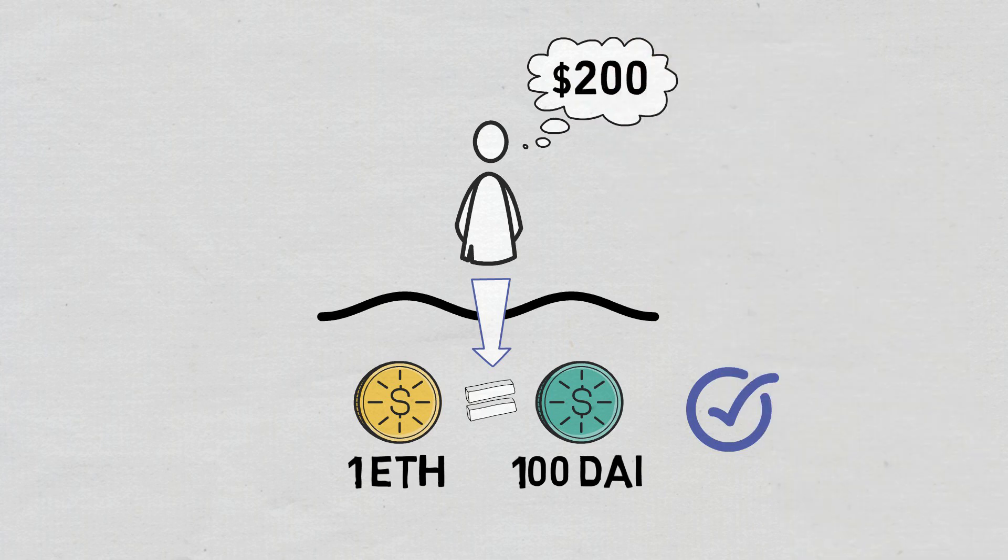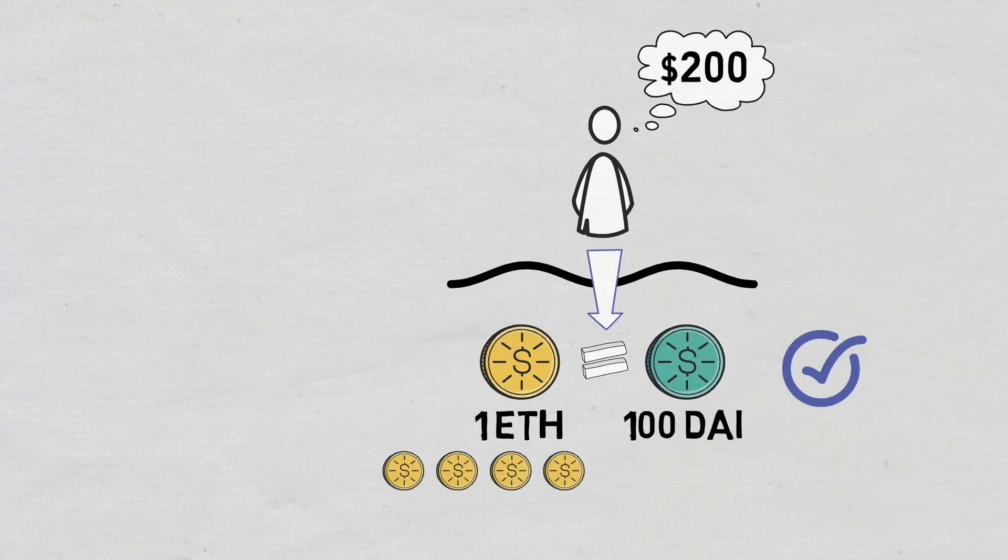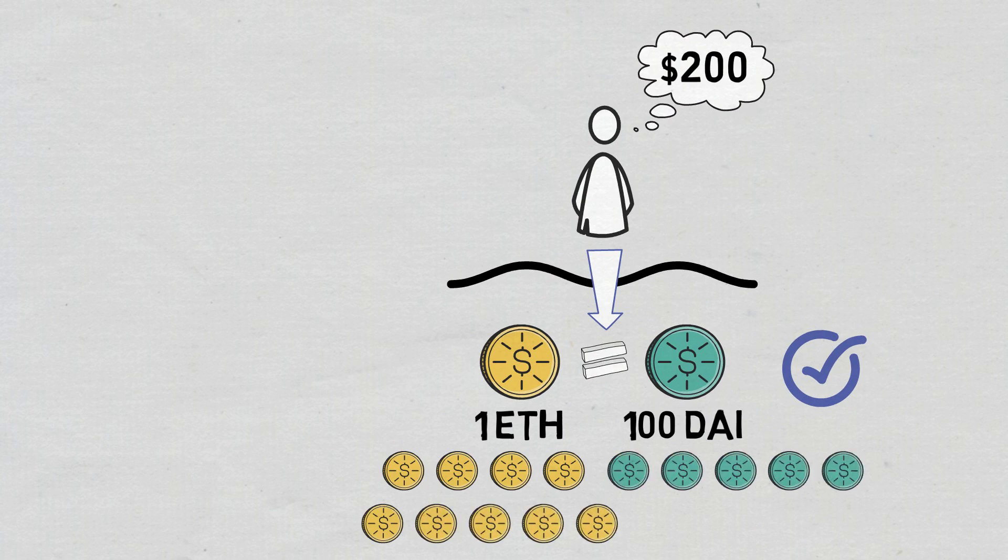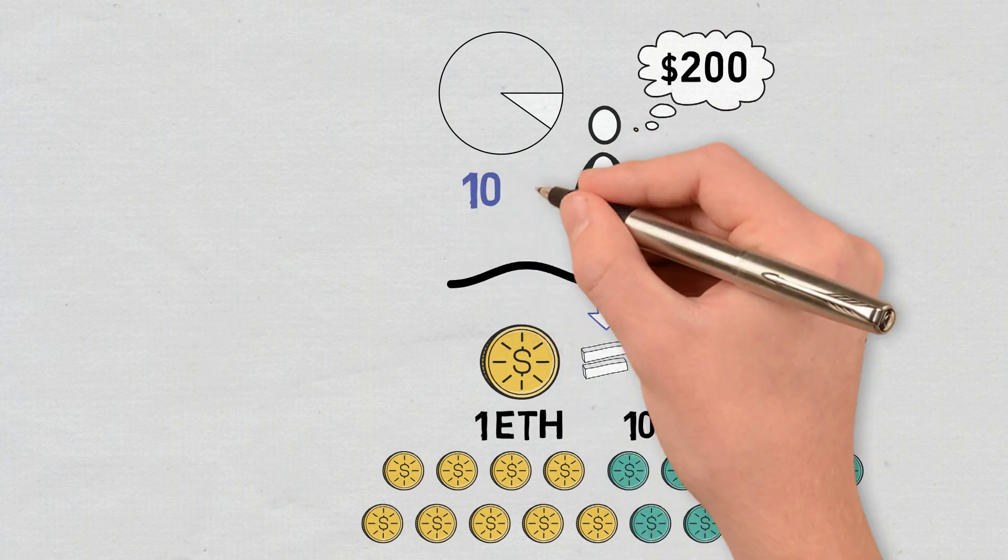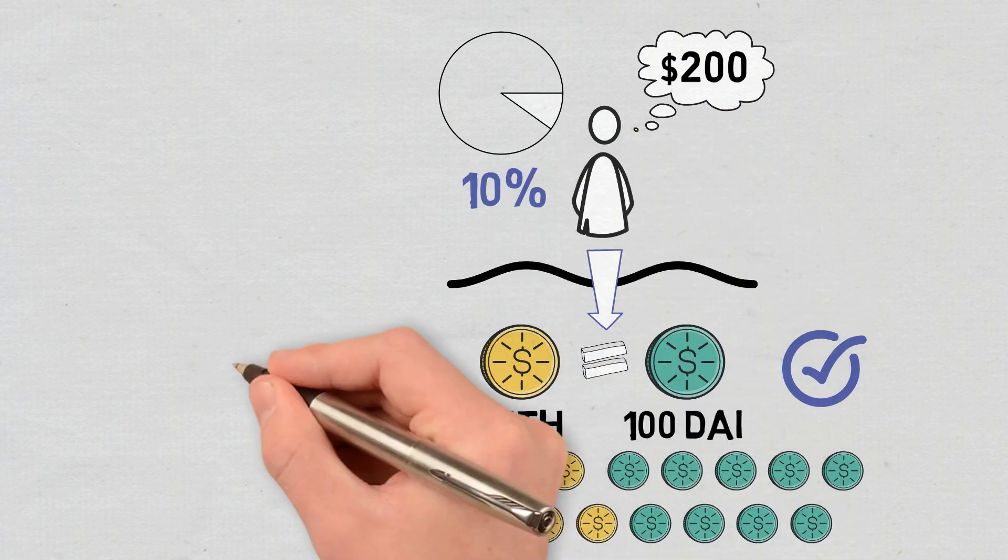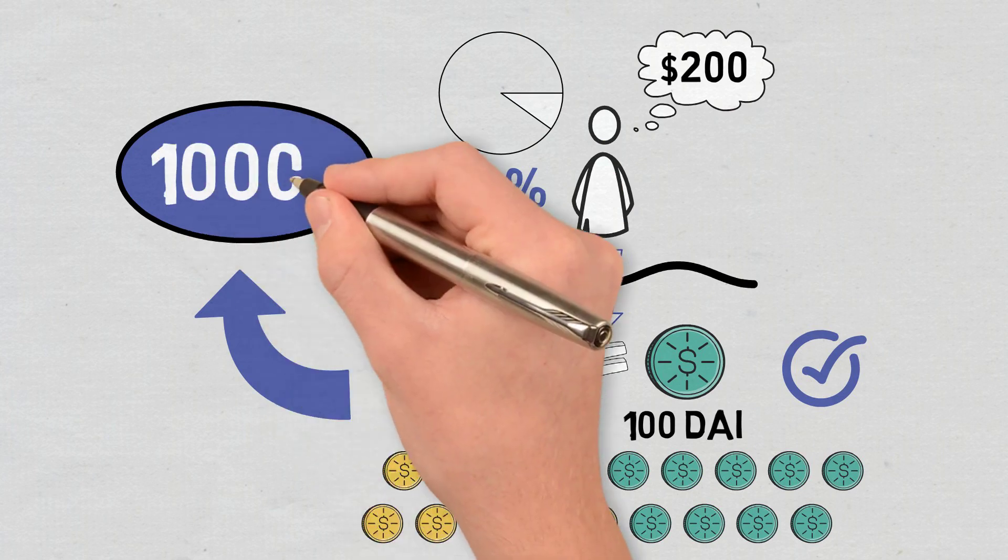If the total in that pool, also supported by other providers, is 10 ETH and 1000 DAI, person X holds a 10% share of the fund and the total liquidity is 10,000.